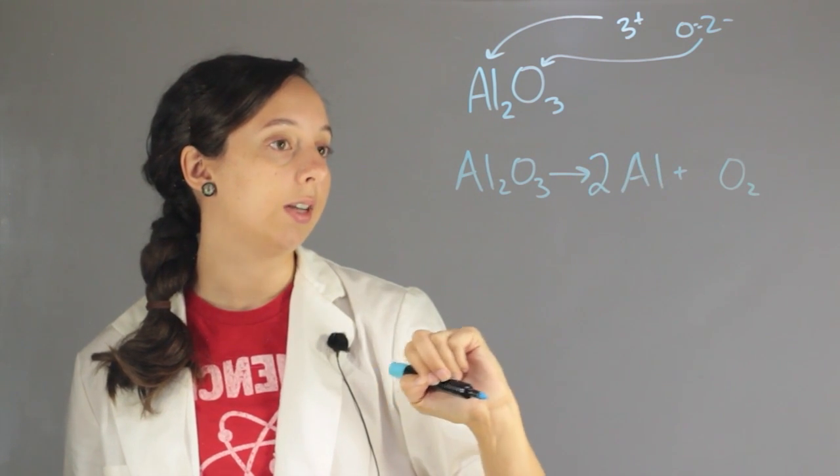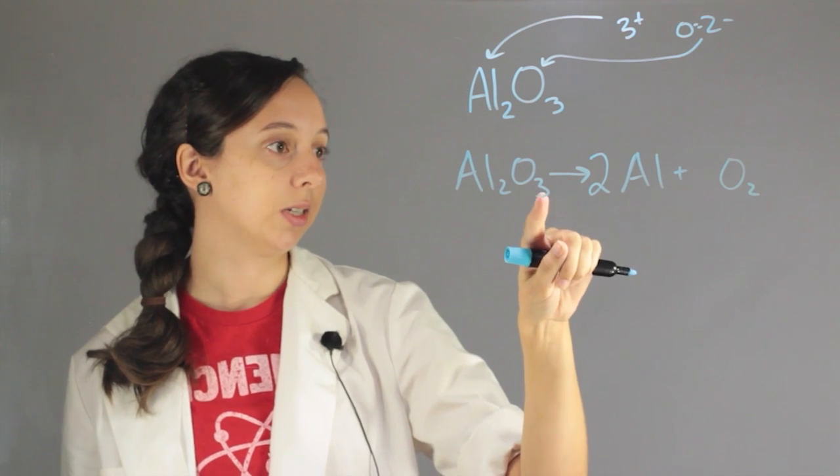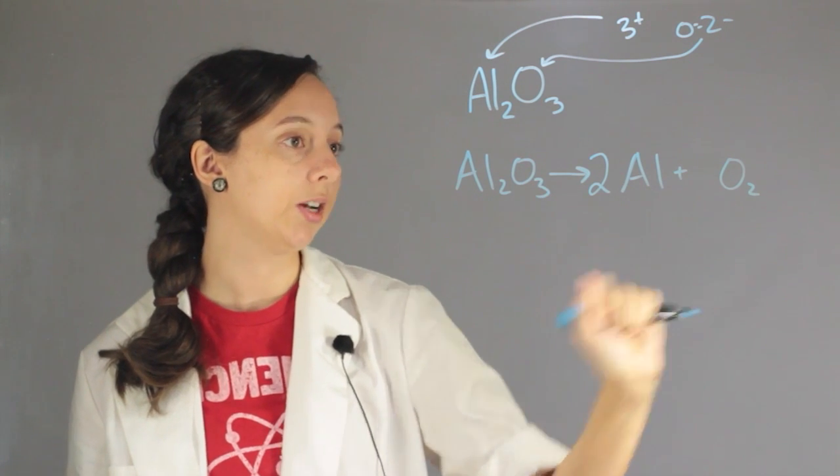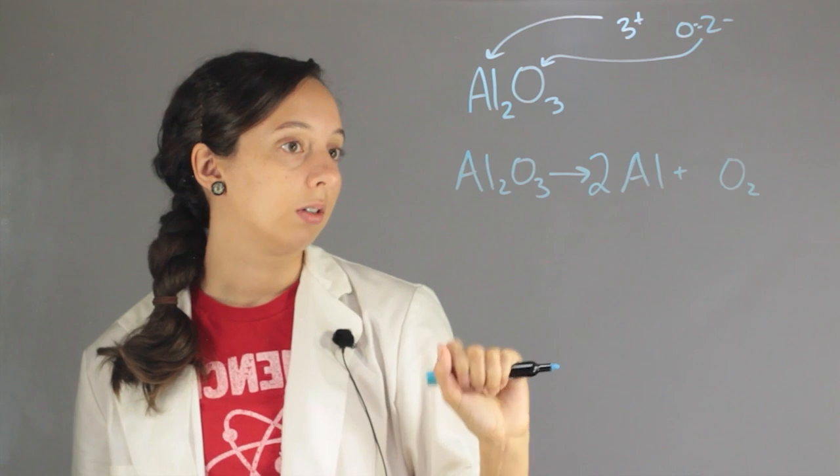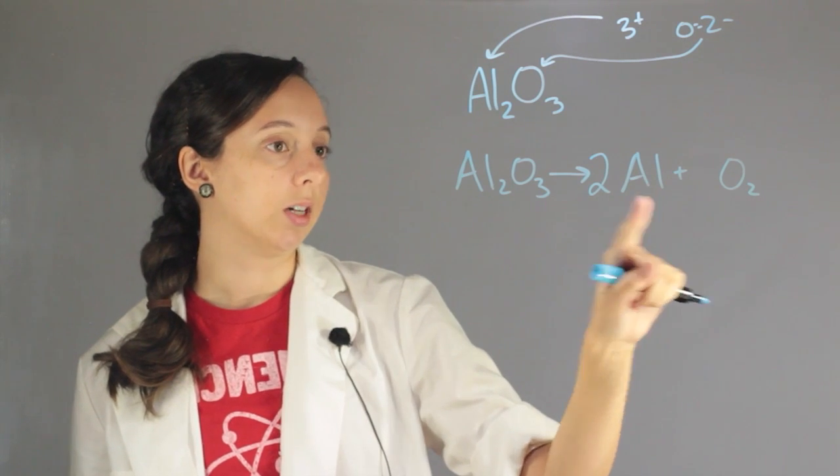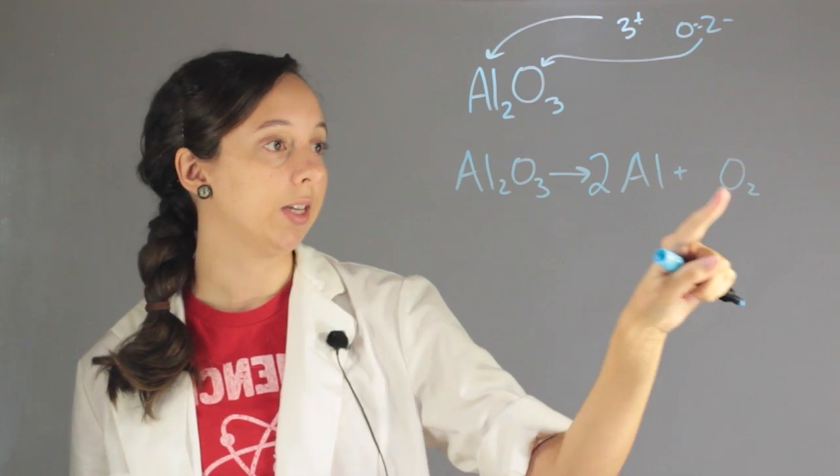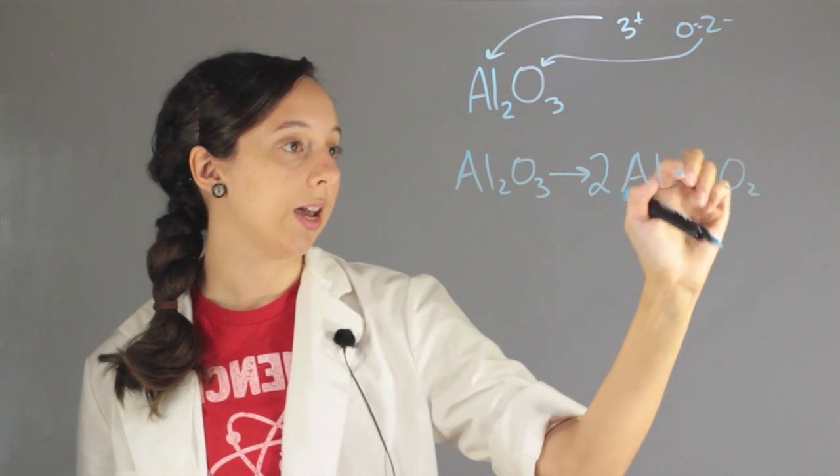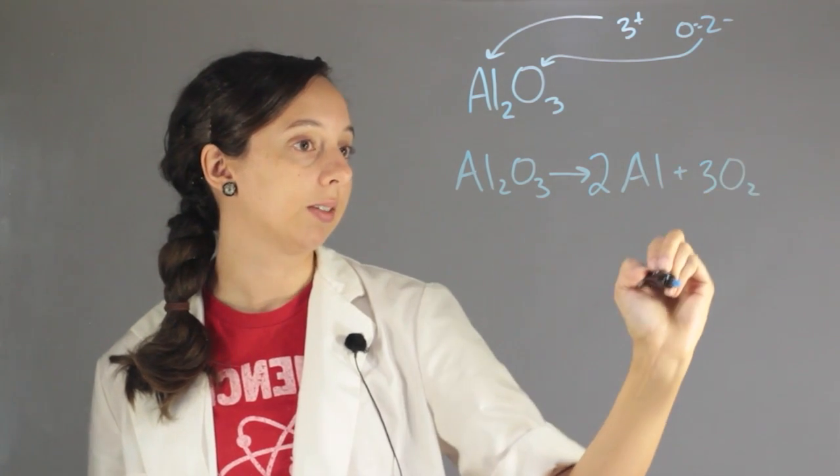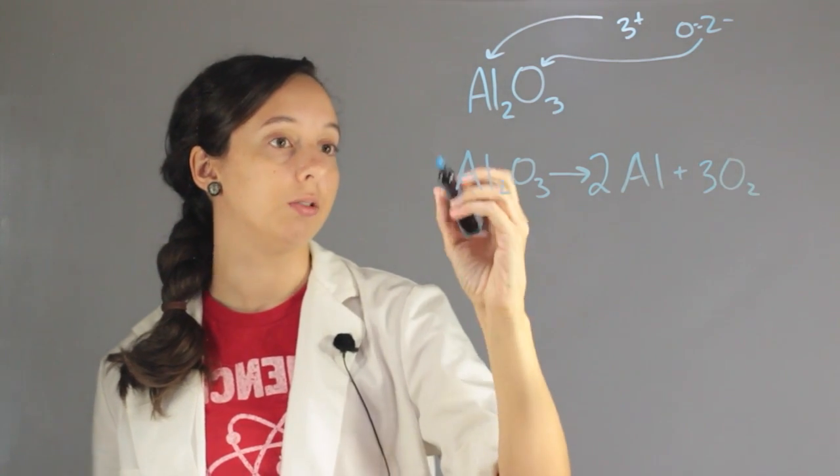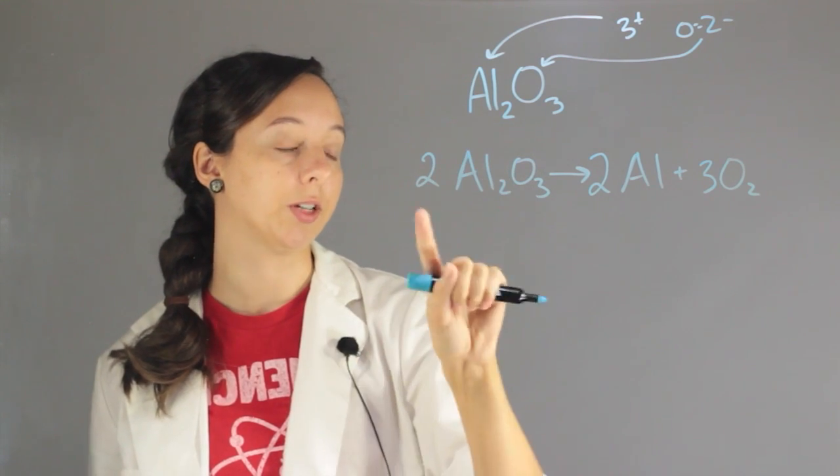And now we have three oxygens on this side, but two on this side. So you can see how we're going to have to change the coefficients of both of these. So let's change this to three, bring it up to six, and then bring this up to two. So bring the oxygen up to six as well.